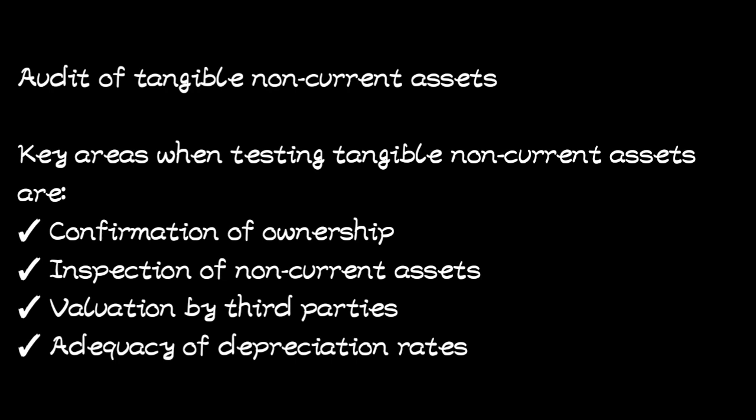The second key area is inspection of non-current assets — physical inspection to see if the asset is really there. Then valuation by third parties, which involves determining the value of non-current assets after a particular period of time. Then the adequacy of depreciation rates — most non-current assets depreciate except for land. Those are the key areas the auditor is supposed to concentrate on when testing non-current assets.